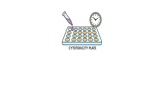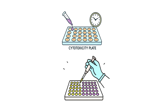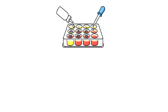Next, we prepare MTT reagent and carefully add it to each well of our cytotoxicity plate, followed by a two-hour incubation period. During this time, something remarkable happens: metabolically active cells — those that haven't been killed by any cytotoxic effects — convert the yellow MTT into purple formazan crystals. After incubation, we carefully remove the MTT-containing medium without disturbing the cells, then add a one-to-one mixture of isopropanol and DMSO to each well, which dissolves the purple crystals within the cells.